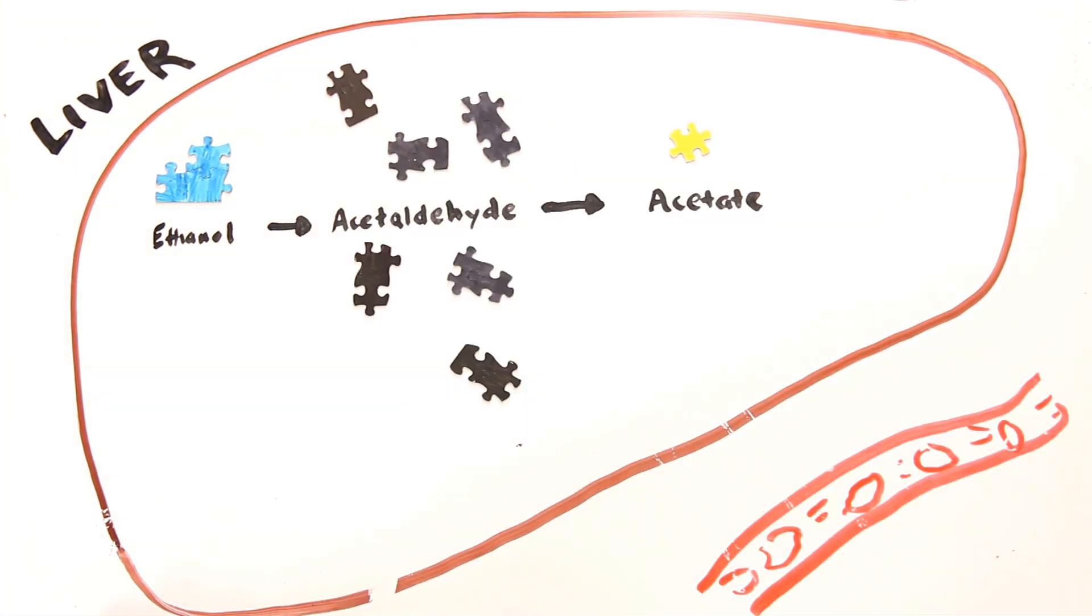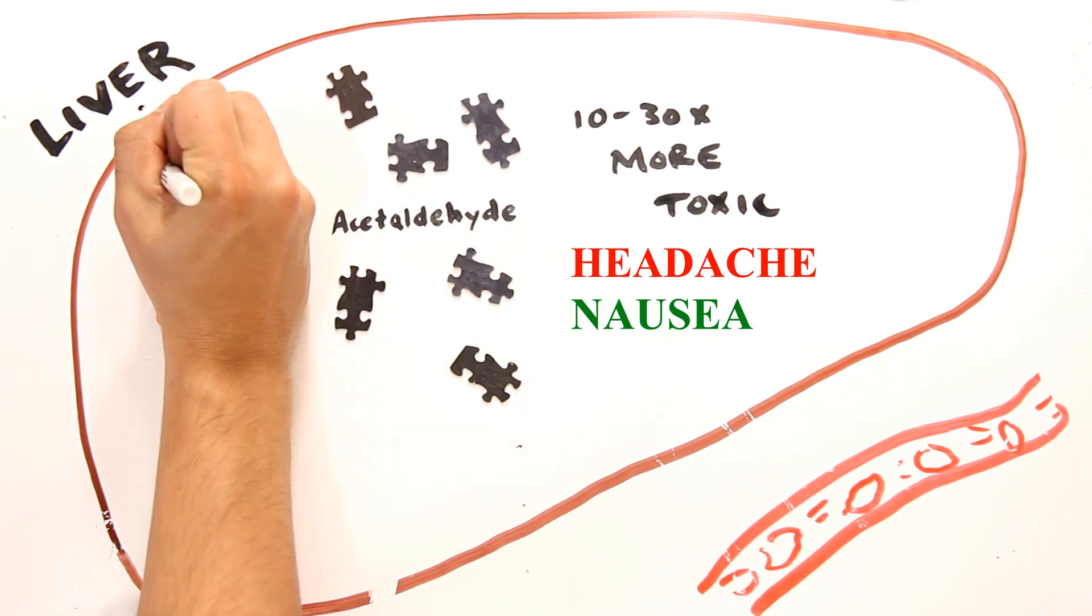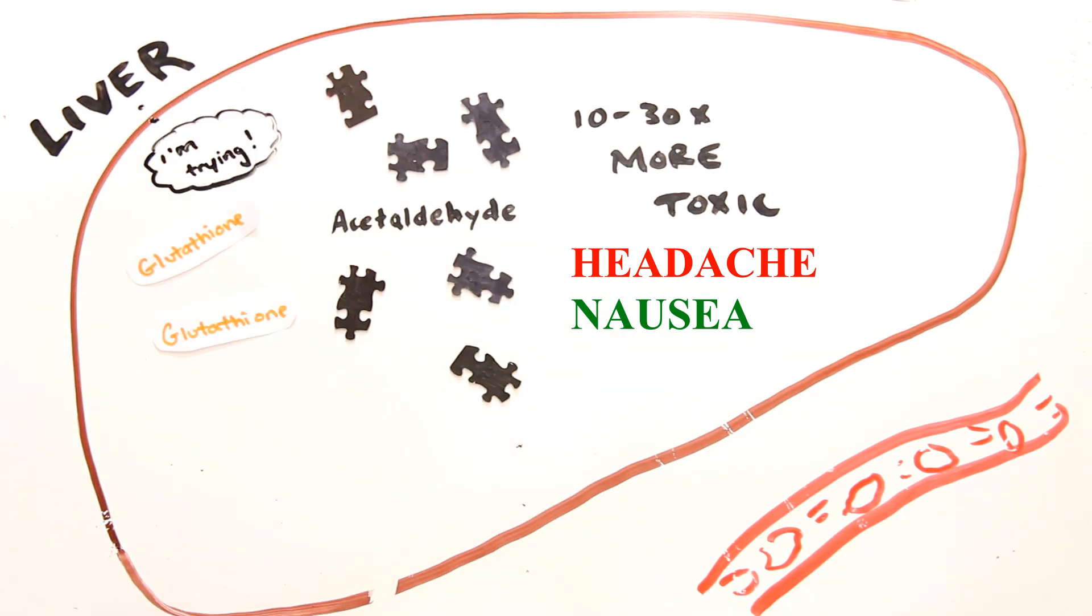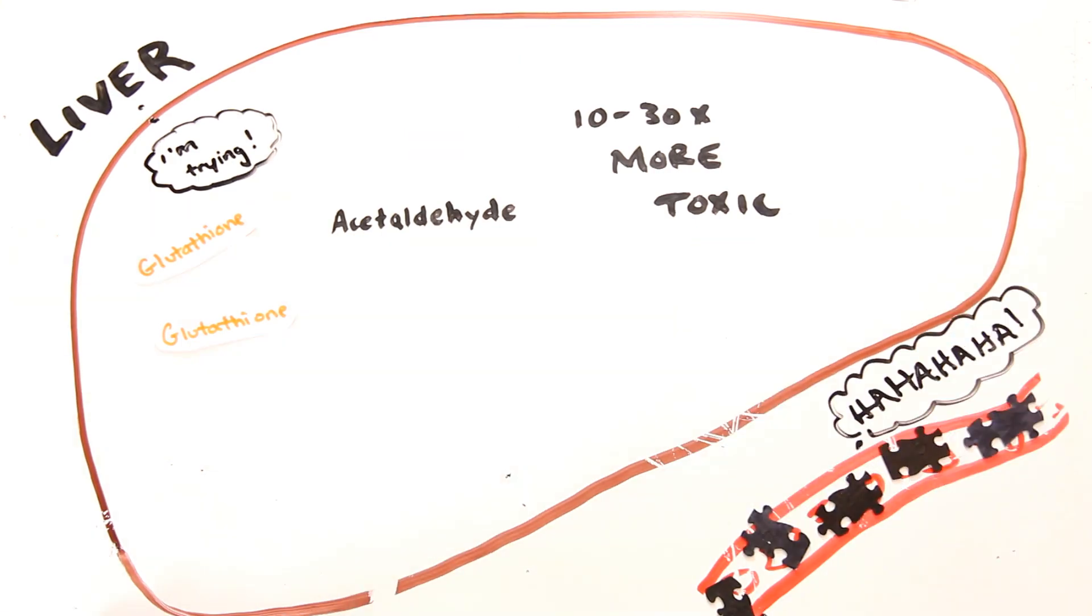So what's so special about acetyl aldehyde? Well, it happens to be 10 to 30 times more toxic than alcohol itself and can lead to headaches and feeling nauseous. So while your liver is working extra hard to produce more glutathione, the acetyl aldehyde is now free to roam your body and is most likely what is making you feel like a non-functioning member of society.